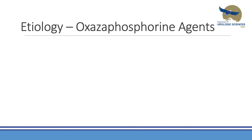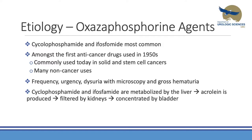Oxazaphosphorine agents — cyclophosphamide and ifosfamide — are the most common drugs we get called about for hemorrhagic cystitis. These were among the first anti-cancer drugs used in the 1950s and are still commonly used today in solid and stem cell cancers but also in non-cancerous presentations: nephrotic syndrome, rheumatoid arthritis, lupus, polyarteritis nodosa, and Crohn's disease.